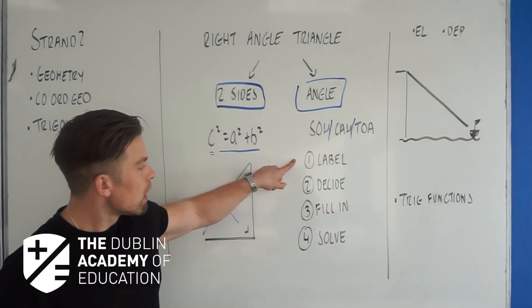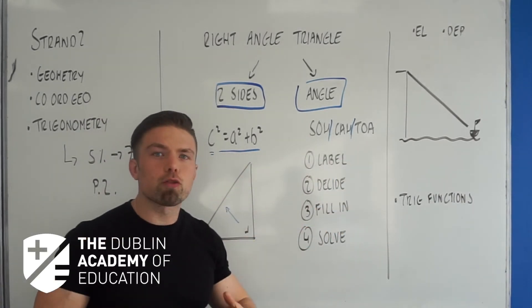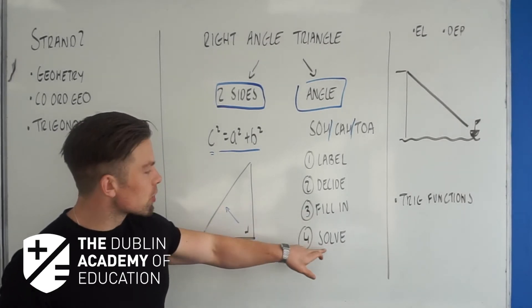You always label the triangle. You then decide which one of these we are using and it's not really a decision, we kind of force them one way or the other. We fill in our numbers from the question and we use our calculator to solve.